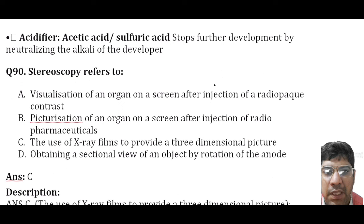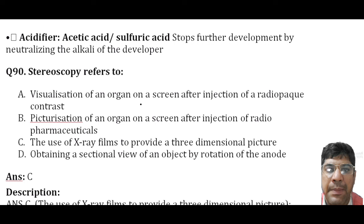Stereoscopy refers to the use of x-ray film to provide a three-dimensional picture. It involves creating a three-dimensional effect in an image by presenting two images separately to the left and right eyes of the viewer.